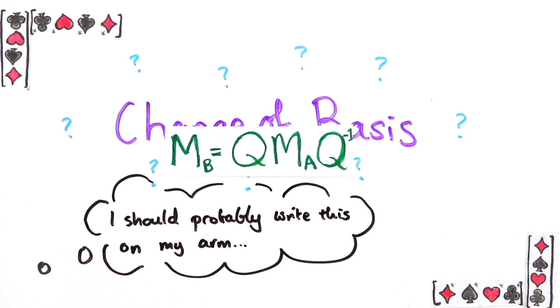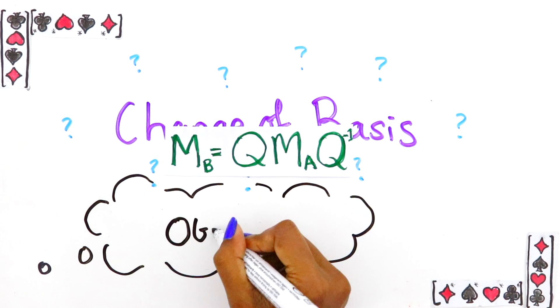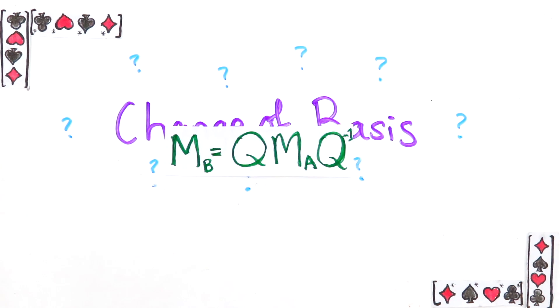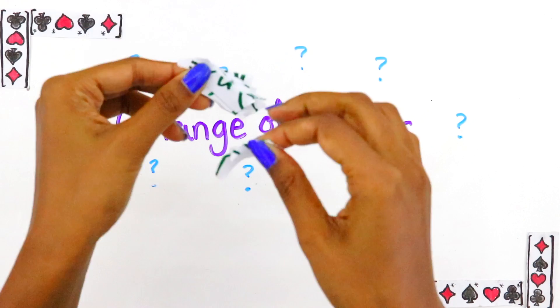What you'll see in this video is if you really understand what a change of basis actually is, how to do it will become obvious to you, and you won't really need the formula after all.